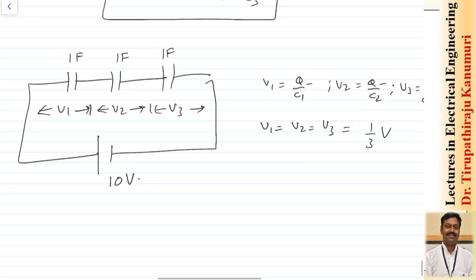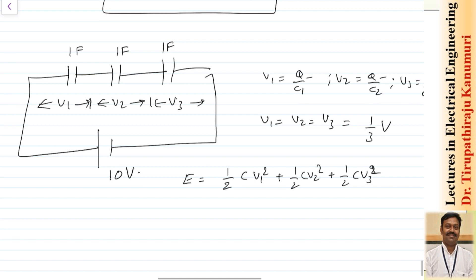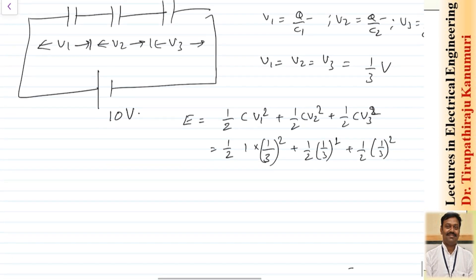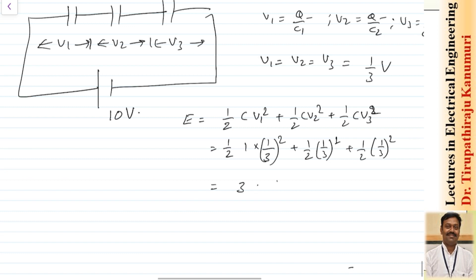Each voltage equals one-third of the total voltage V. Now let us calculate the energy stored in the total capacitance: it equals (1/2)×C×V1² plus (1/2)×C×V2² plus (1/2)×C×V3². Substituting C equals 1 and each voltage equals V/3: this becomes three times (1/2)×1×(V/3)², which simplifies to three times (1/2)×(1/9)×V², giving us (1/6)V². So the total energy stored is (1/6)V².